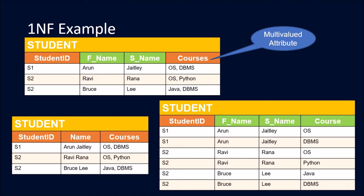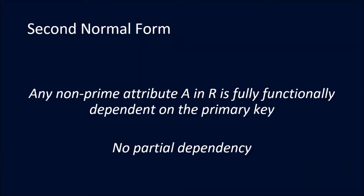The final table is now in 1NF, but you can see it still allows some repeated data. To reduce that, we have to go to further higher normal forms.